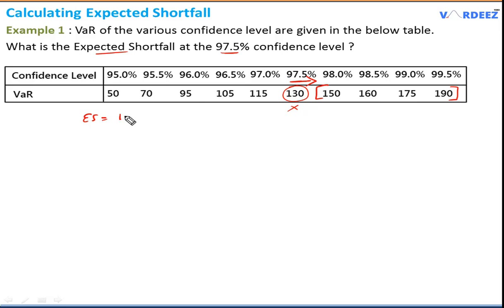We just take the average of all VARs above the target VAR. That's what the definition says. The expected shortfall is the average of 150, 160, 175, and 190 divided by 4, which equals 168.75. This is the expected shortfall, the average of all these VARs. Notice that the expected shortfall at 97.5% is greater than the VAR at 97.5%.